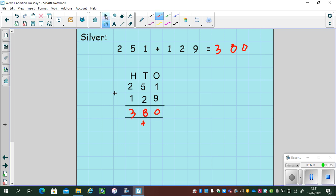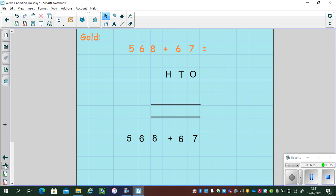If you're looking for something a little more challenging, let's have a look at a gold example. We've got 568 add 67. And this number sentence is going to involve two exchanges. So let's set it up first. 568: eight ones, six tens, five hundreds. Add symbol at the side. 67: seven ones, six tens. Now it's all set up correctly in the right place value columns. I can add.